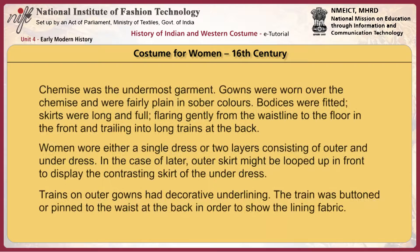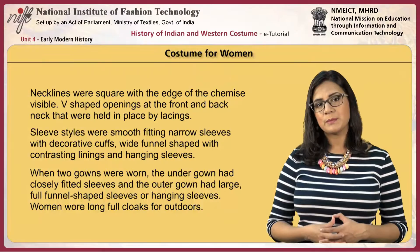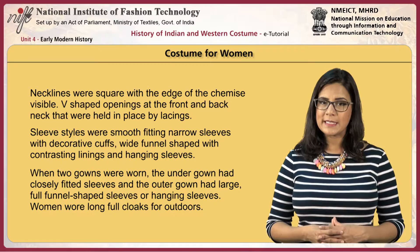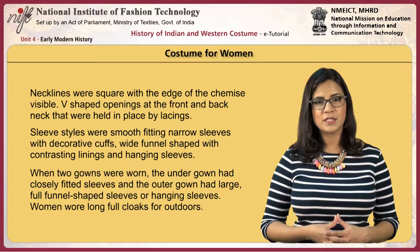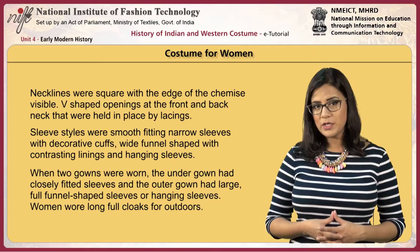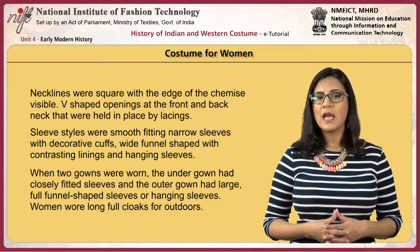For women, the chemise was the undermost garment. Gowns were worn over the chemise and were in fairly plain and sober colors. Bodices were fitted. Skirts were long and full, flaring gently from the waistline to the floor in the front and trailing into long trains at the back. Women wore either a single dress or two layers consisting of an outer and underdress. In the case of the latter, the outer skirt might be looped up in front to display the contrasting skirt of the underdress. Trains on outer gowns had decorative underlinings. The train was buttoned or pinned to the waist at the back in order to show the lining fabric. Necklines were square with the edge of the chemise visible, or V-shaped openings at the front and back neck held in place by lacings. Sleeve styles included smooth fitting narrow sleeves with decorative cuffs, wide funnel-shaped with contrasting lining, and hanging sleeves. When two gowns were worn, the under gown had closely fitted sleeves and the outer gown had large full funnel-shaped sleeves or hanging sleeves. Women wore long, full cloaks for outdoors.